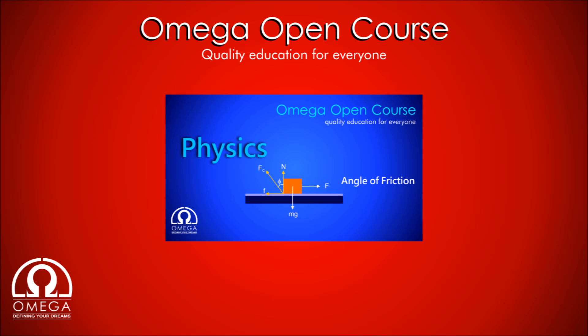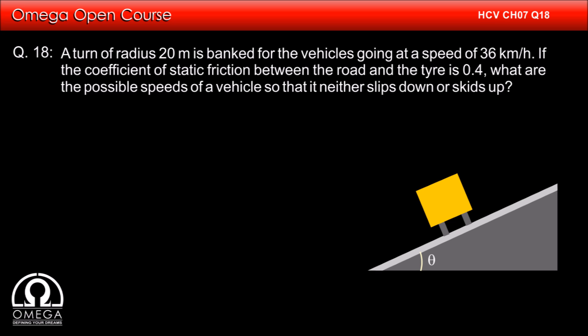The link for the video is shown on the screen and is given in the descriptions below. A turn of radius 20 meter is banked for the vehicle going at a speed of 36 km per hour. The coefficient of static friction between the road and the tire is 0.4. What are the possible speeds of a vehicle so that it neither slips down or skids up?